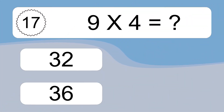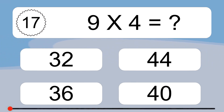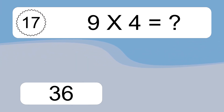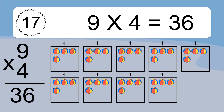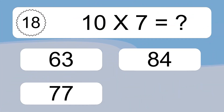9 times 4 equals what? 9 times 4 equals 36. We have 9 boxes and each box has 4 colorful balls inside. If you count all the balls in all the boxes together, you will have 9 times 4 balls. This equals 36 balls.